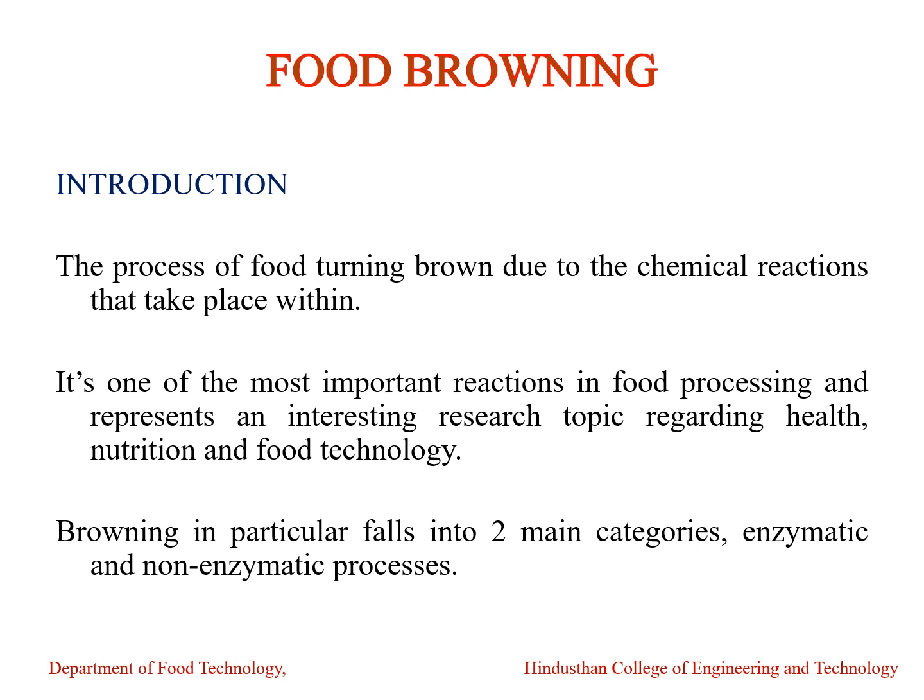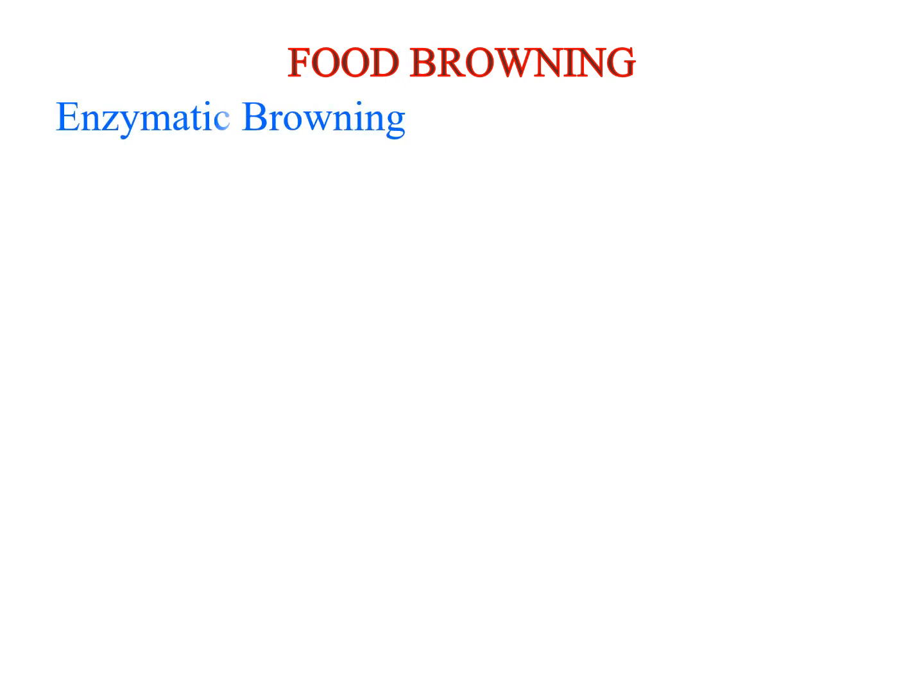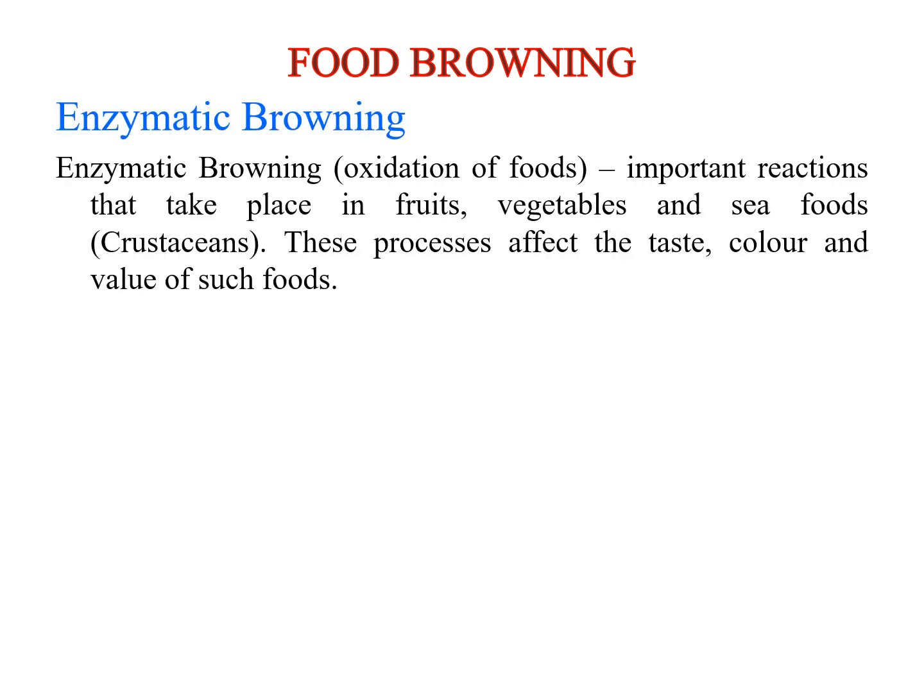Food browning falls into two main categories: enzymatic browning and non-enzymatic browning. Food browning is classified into these two types, and we will explore each one.